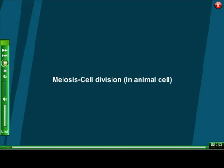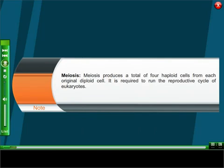Meiosis cell division in animal cell. Meiosis produces a total of four haploid cells from each original diploid cell. It is required to run the reproductive cycle of eukaryotes.